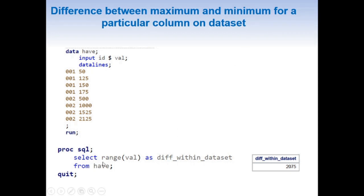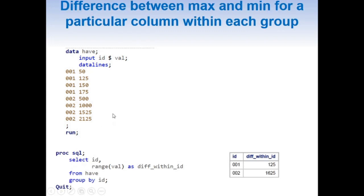Now that we've illustrated that the range function can be used to find the difference between maximum and minimum values for a particular column on a dataset, we can use similar logic to find the difference for a particular column within each group.